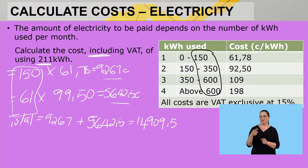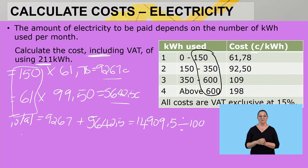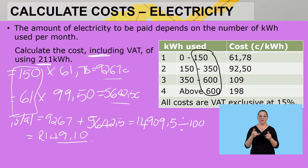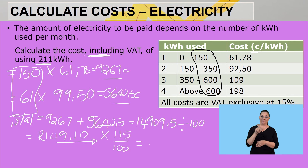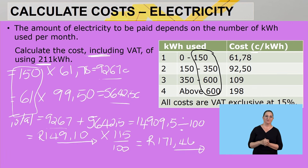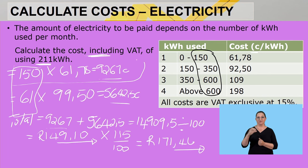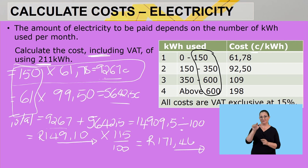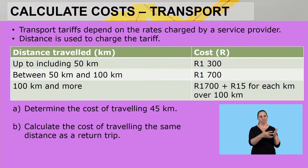Remember this total is in cents — you need to convert to rands by dividing by 100. This gives a total of 149 rands and 10 cents. The table says VAT exclusive, so multiply by 1.15 over 100 to include VAT, giving a total of 171 rands and 46 cents including VAT. Note: the first block calculation should be 150 × 61.78 cents = 9,267 cents.